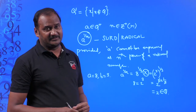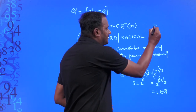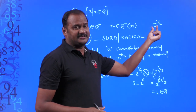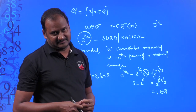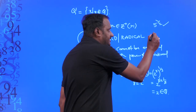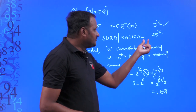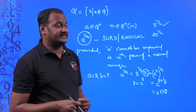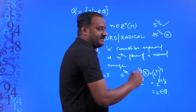We can give many examples satisfying these conditions. Suppose I write 5 to the power of 1 by 2 — can I say this is a surd? Absolutely, because 5 cannot be expressed as the second power of a rational number. There is no rational number whose square is 5. So 5 to the power of 1 by 2 is a surd. But can I write 25 to the power of 1 by 2 as a surd? No, because 25 equals 5 squared — 25 can be expressed as the second power of a rational number. That is why 25 to the power of 1 by 2 cannot be a surd.